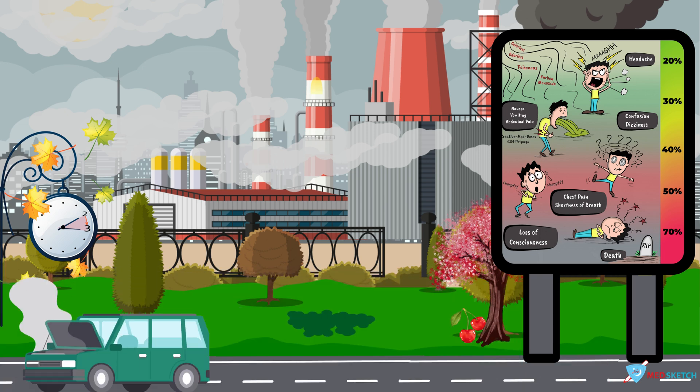It can also be used in suicidal cases, but mostly accidental exposure is seen. You can also see a car on the left side of the scene that is emitting fumes, representing the accidental poisoning.